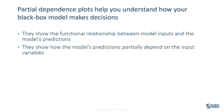Partial dependence plots, or PD plots, help you understand how your model makes decisions. They depict the functional relationship between a small number of model inputs and a model's predictions. They're called partial dependence plots because they show how the model's predictions partially depend on values of the input variables of interest — in other words, how the model would respond if you increase or decrease x.